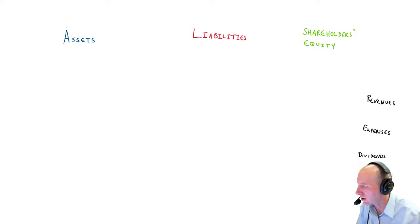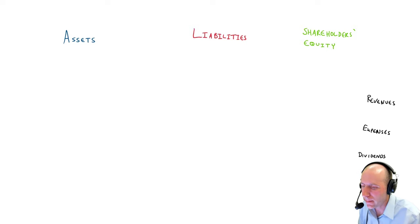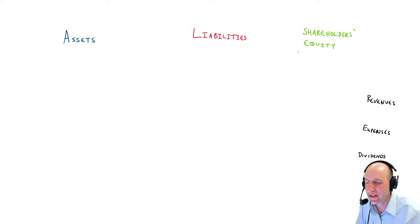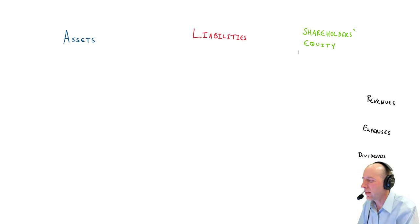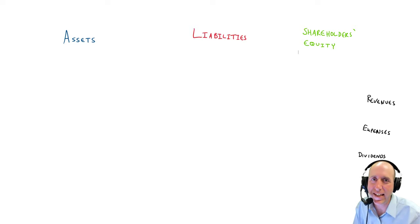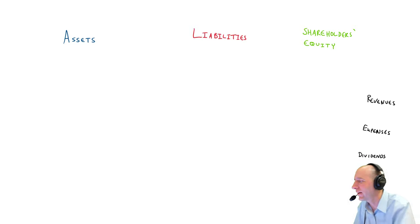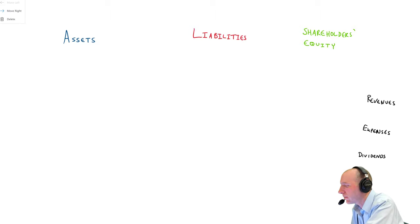Here are the six words: assets, liabilities, shareholders' equity — I guess that's two words I've counted as one — revenues, expenses, and dividends. And the three that are in color there are really going to be key to your life as an accountant. Well, they'll all be key, but those three particularly will be.